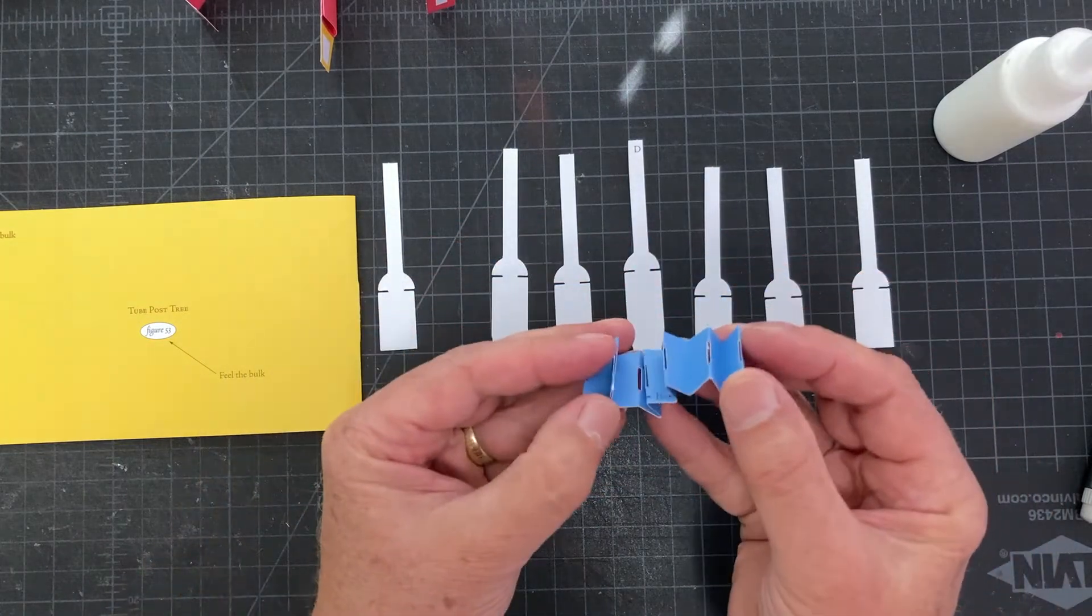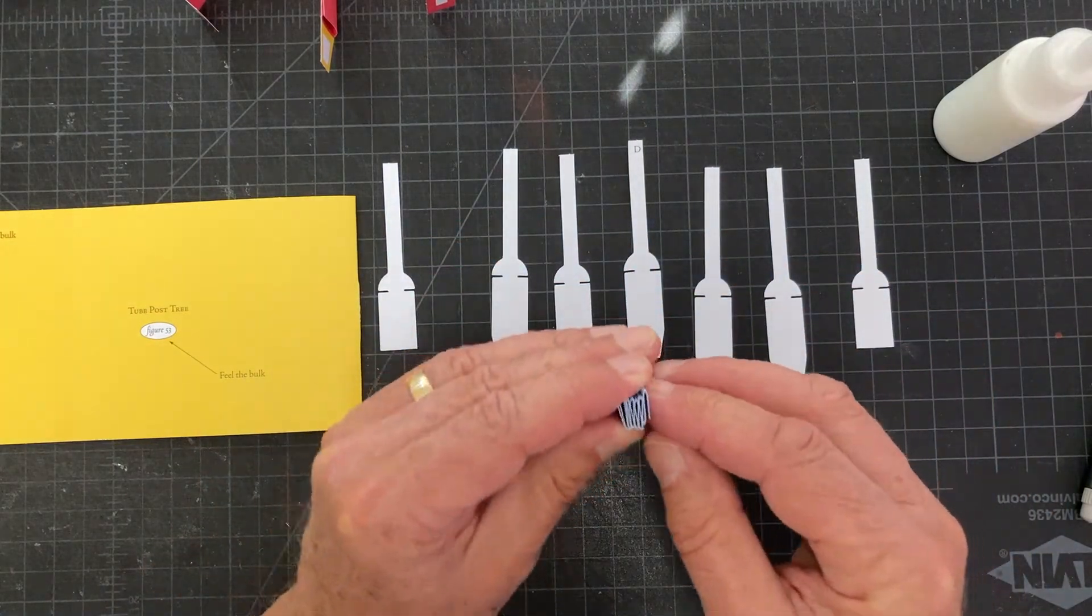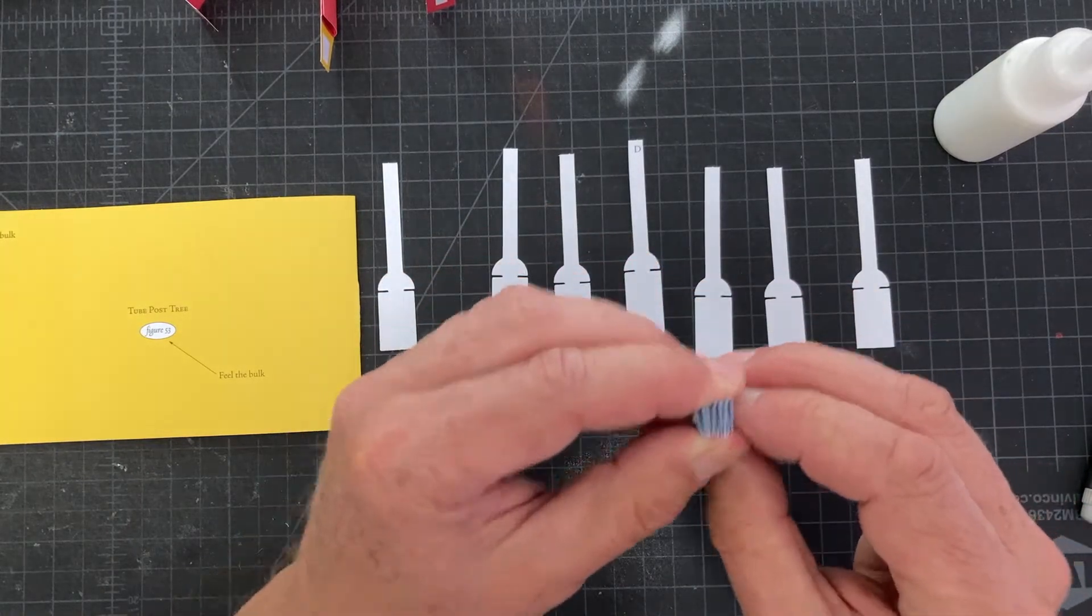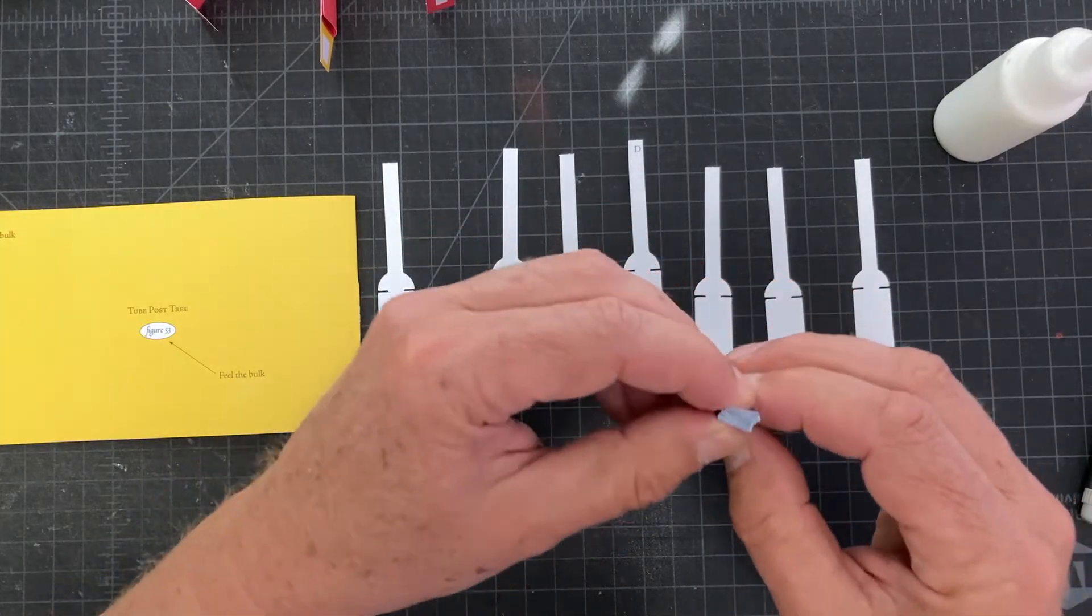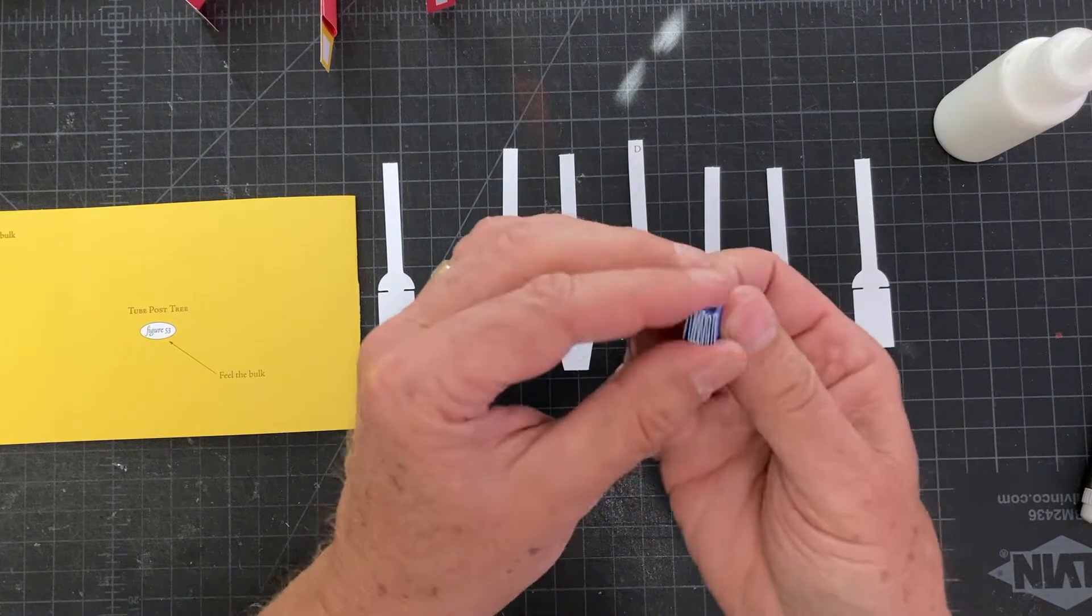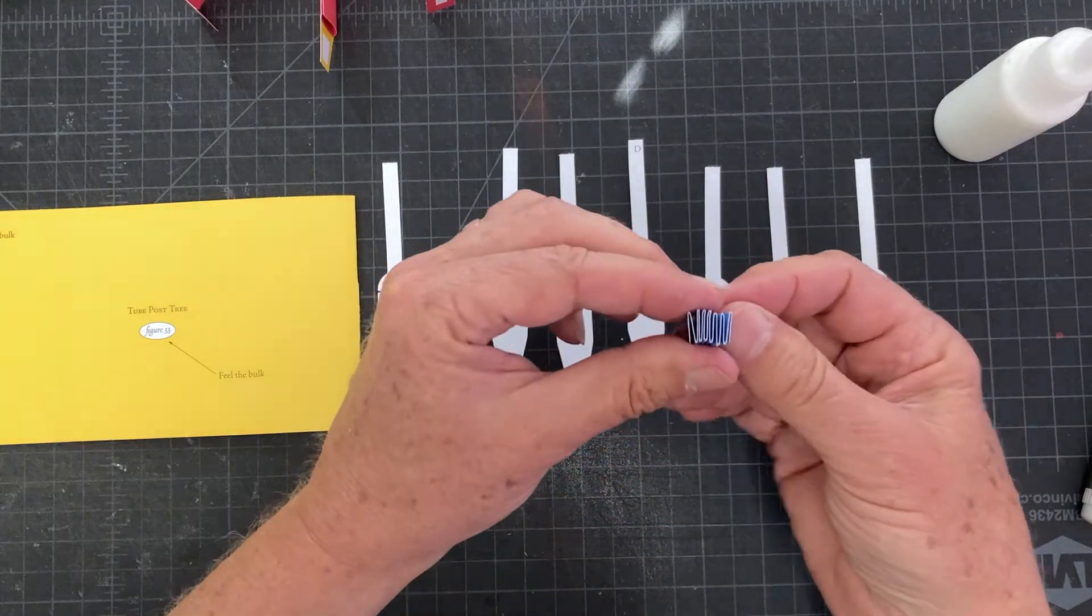Okay, so you have an accordion piece like this. These should be all about equal. The die cutting is a little bit off, so you can just go ahead and give it a little squeeze and force them to be somewhat equal.